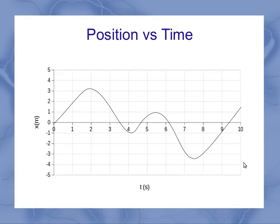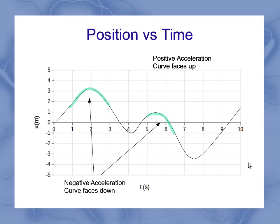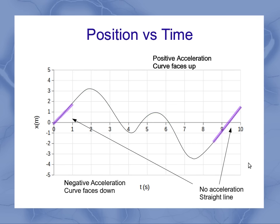We can also learn about acceleration from the position versus time graph. A positive acceleration is going to look like a place where the curve faces upward, and we've got examples of those here. Negative acceleration is when the curve faces downwards, like these two sections over here. And if you've got sections where the curve is fairly flat, that means we've got no acceleration in those particular areas.